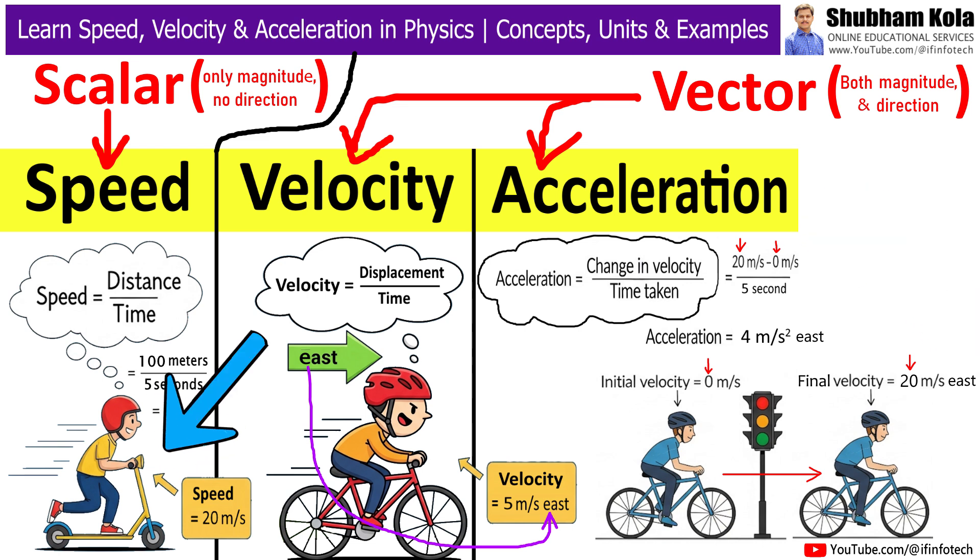So, in our bike example, speed tells us I am moving at 20 meters per second. Velocity tells us I am moving at 5 meters per second east. And acceleration tells us my velocity is increasing by 4 meters per second every second.